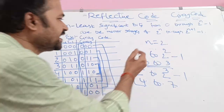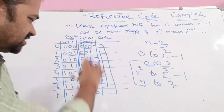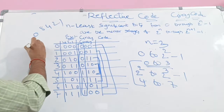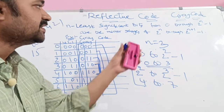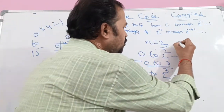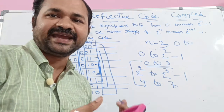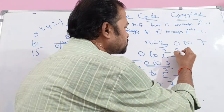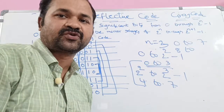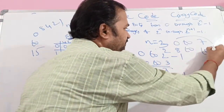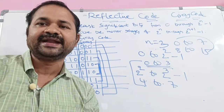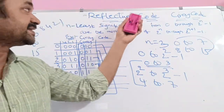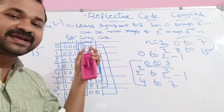Likewise, if n value is 3, we have 4-bit data with positional weights 8, 4, 2, 1, representing decimal numbers 0 to 15. Then 0 to 2^3 minus 1 (0 to 7) are the mirror images of 2^3 through 2^4 minus 1 (8 to 15). So 0 and 15 are mirror images, 1 and 14 are mirror images, 2 and 13 are mirror images, and likewise 7 and 8 are mirror images. That's why Gray code is an example of a reflective code — because we get these mirror images.